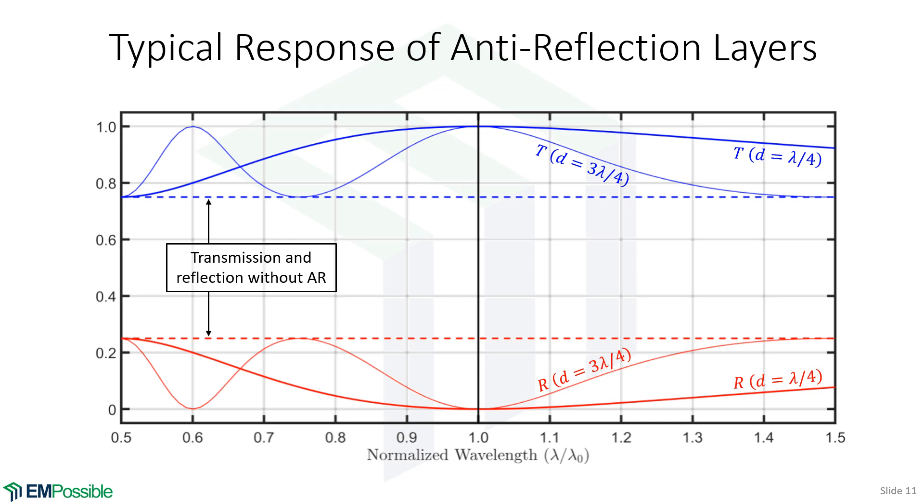So here's a typical response of anti-reflection layers. So let's first look at these dashed lines. This is the transmission and reflection without the anti-reflection layer. And so here we're going from something that has a refractive index of 1 to something that has a refractive index of 3. And so we're getting a 25% reflection all the way across. When we introduce a quarter wave anti-reflection layer,